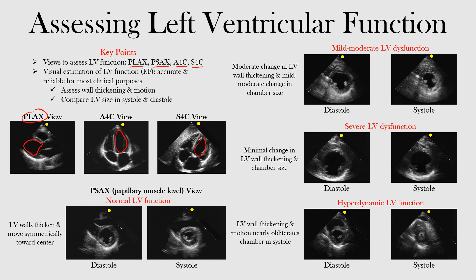Now, to assess the range from mild to moderate, severe, and even hyperdynamic LV function, we'll always want to start with normal. The views from here on will be in the parasternal short axis view, specifically at the level of the papillary muscle — the papillary muscle level parasternal short axis view. This will help us see what is normal and what is abnormal, always comparing diastole and systole.